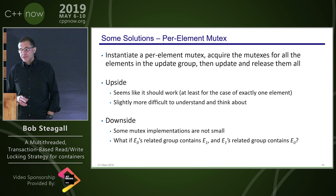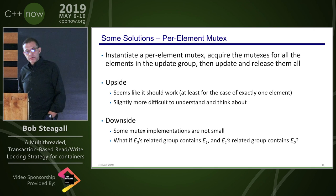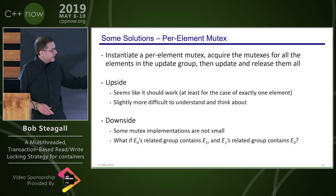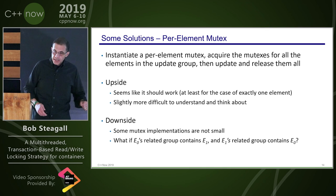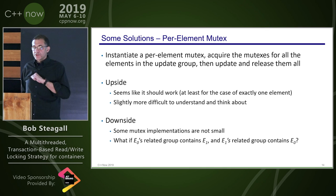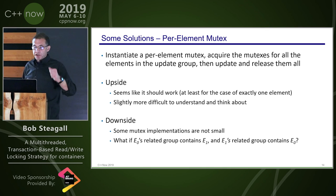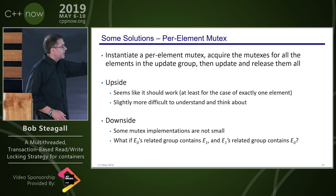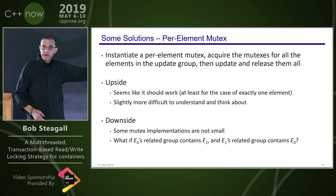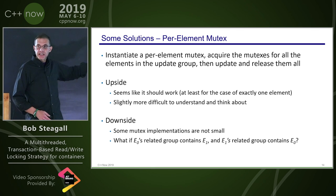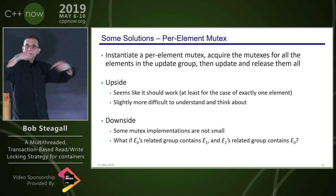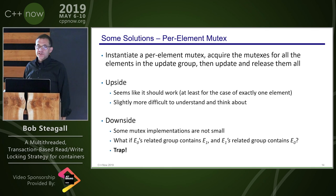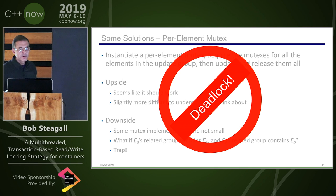The real problem with per-element mutexes is deadlock. Suppose transaction T0 wants to update element E0, and T1 wants to update element E1 — but E0's related group contains E1, and E1's related group contains E0. You have a mutual dependency. This is a recipe for deadlock.